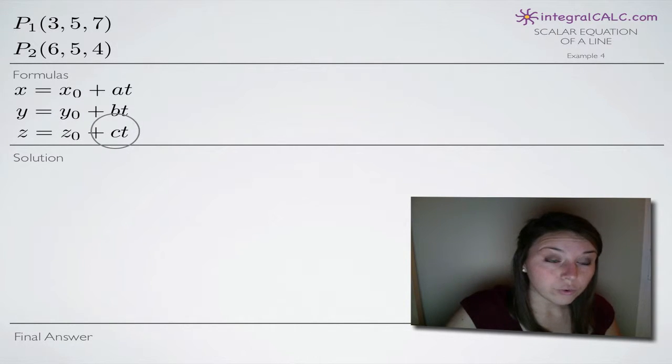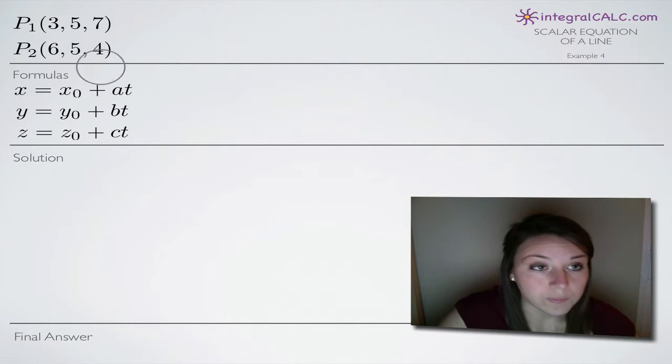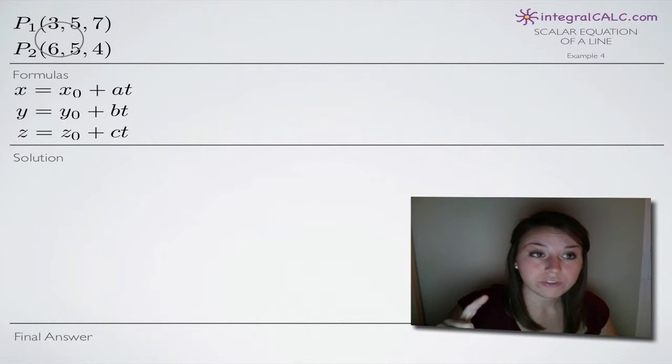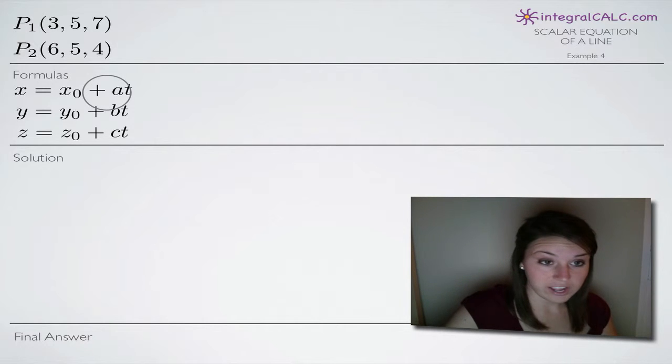We're also going to, before we can use these formulas, need to find a vector that relates to this problem. We can't use these formulas with just two points. We need to first use these two points to find the vector, then we can use p₁ and the vector along with the formulas to find the scalar equations. You always need a point and a vector. We don't have the vector yet, so we have to use the two points to find it first.